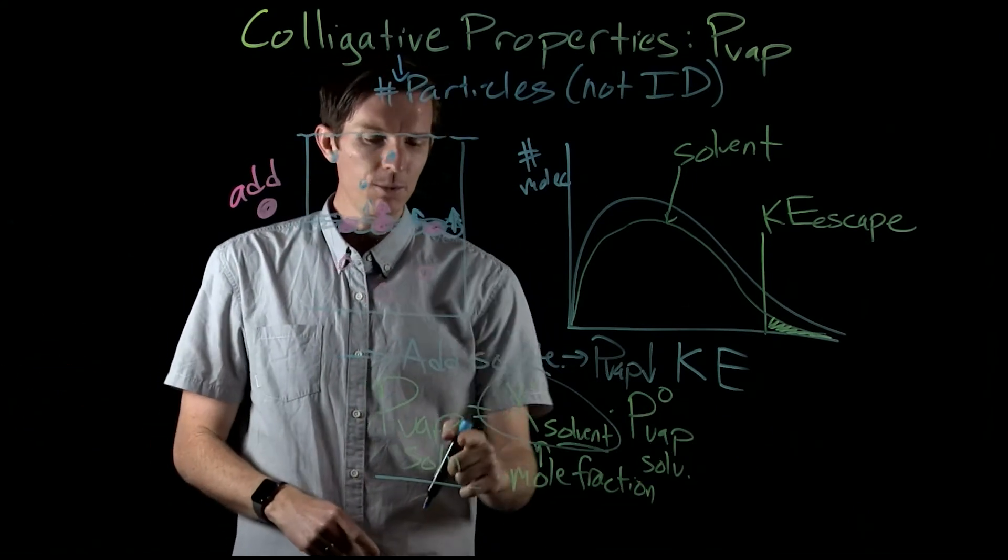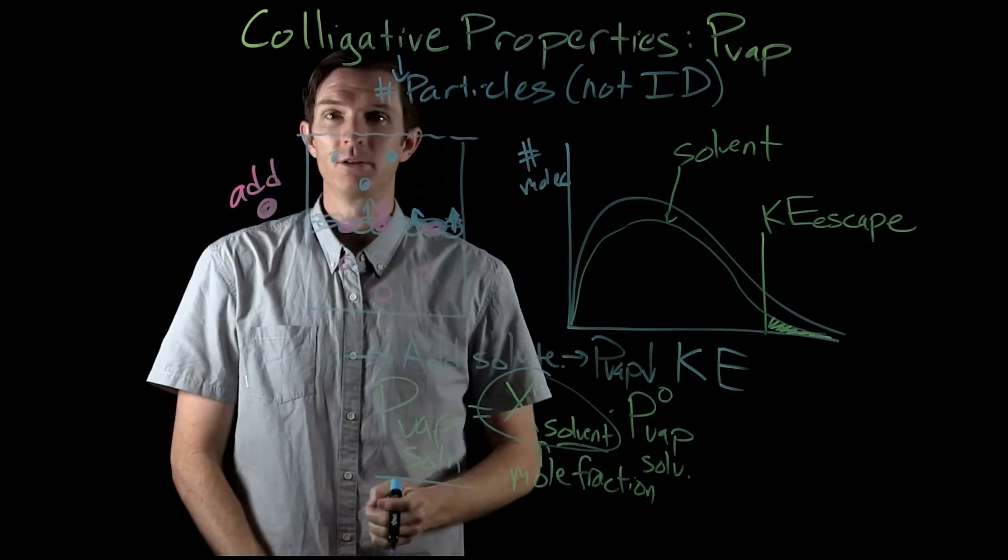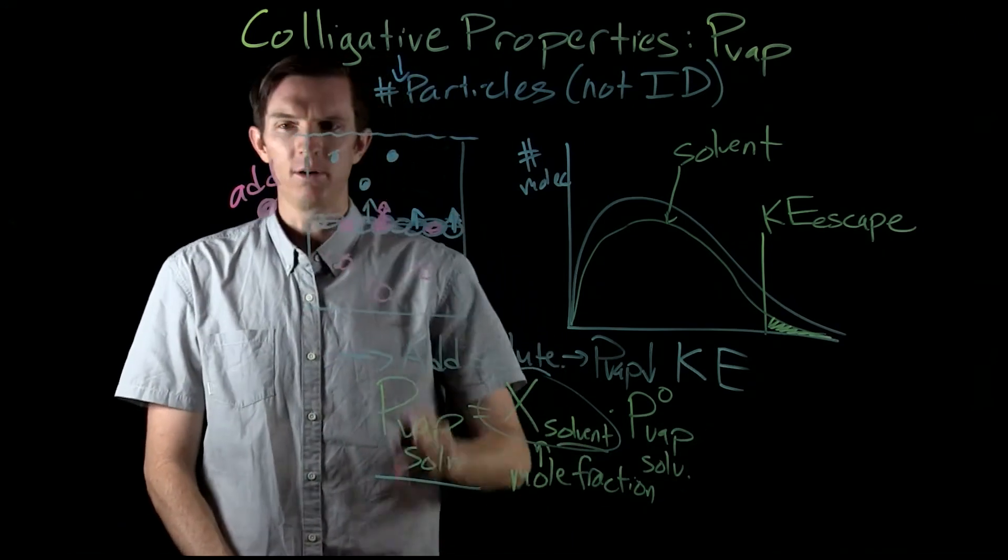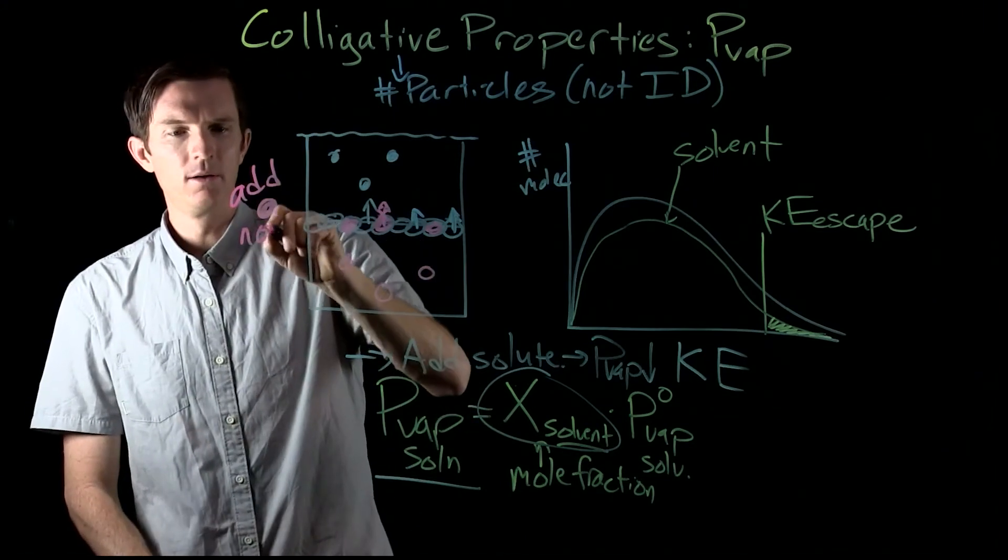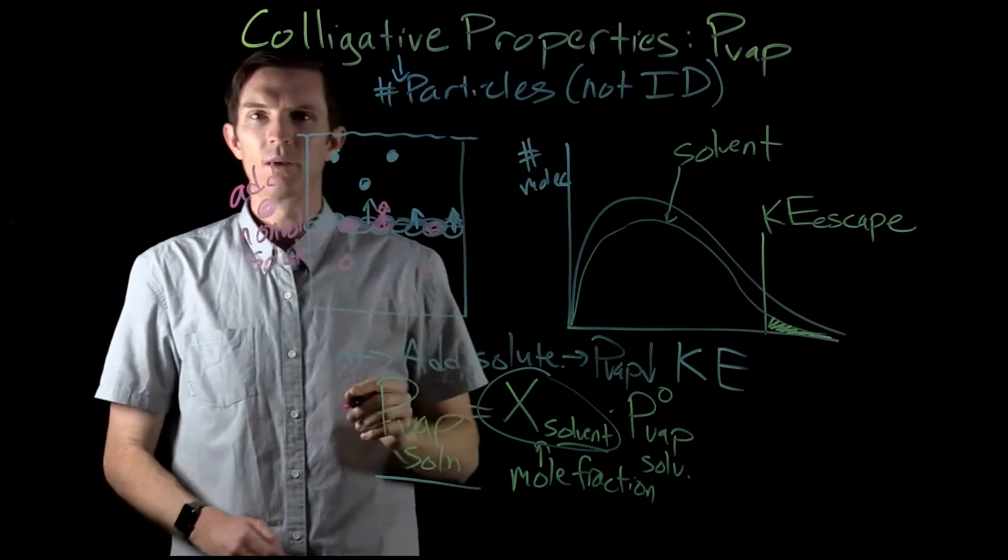And mole fractions can only be from zero to one. So we'll see that our vapor pressure of our solution will always be less than the vapor pressure of our solvent when we add in this, what we called here, our non-volatile solute particle.